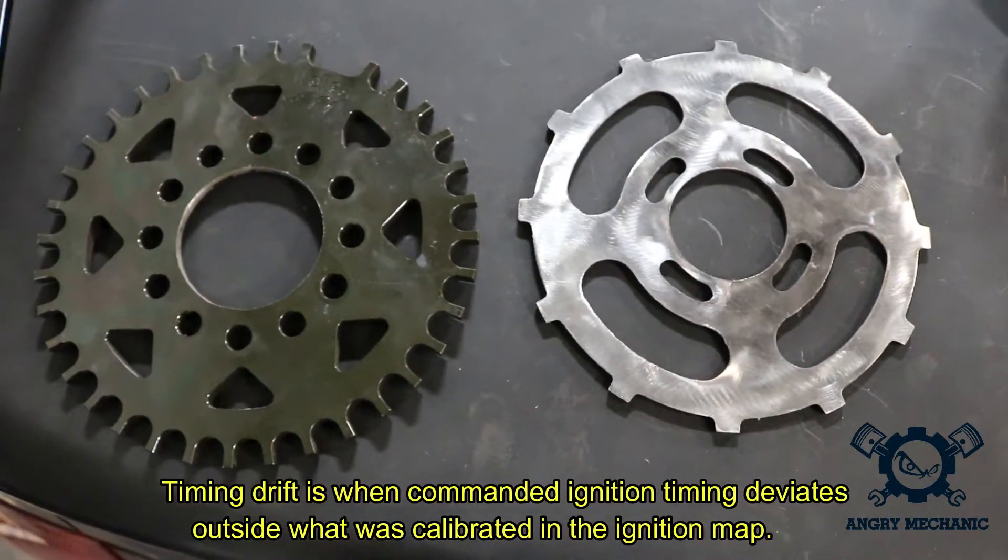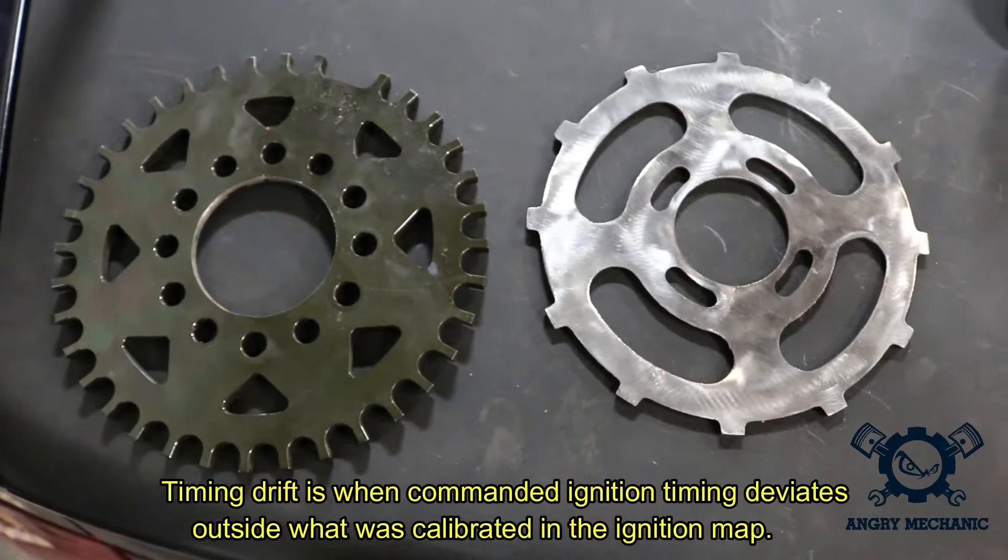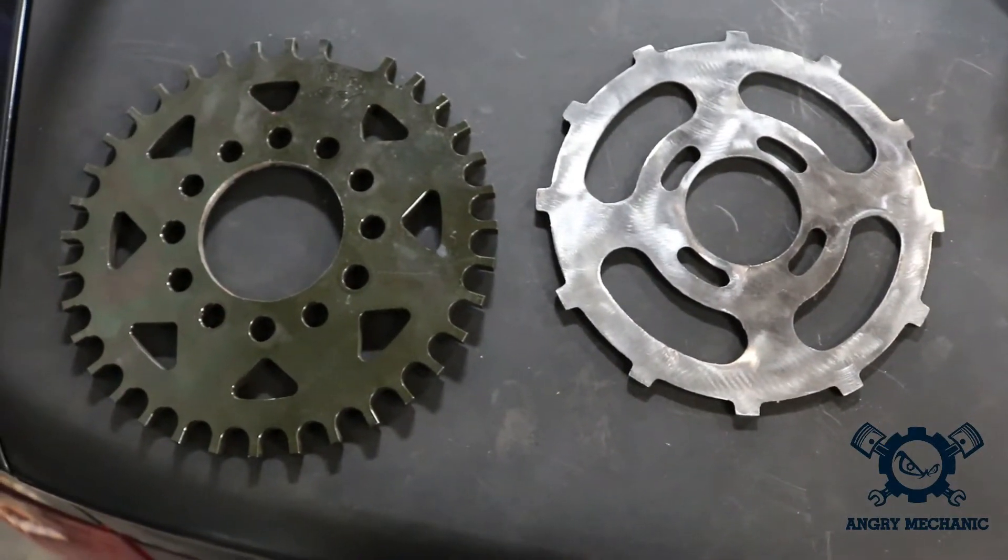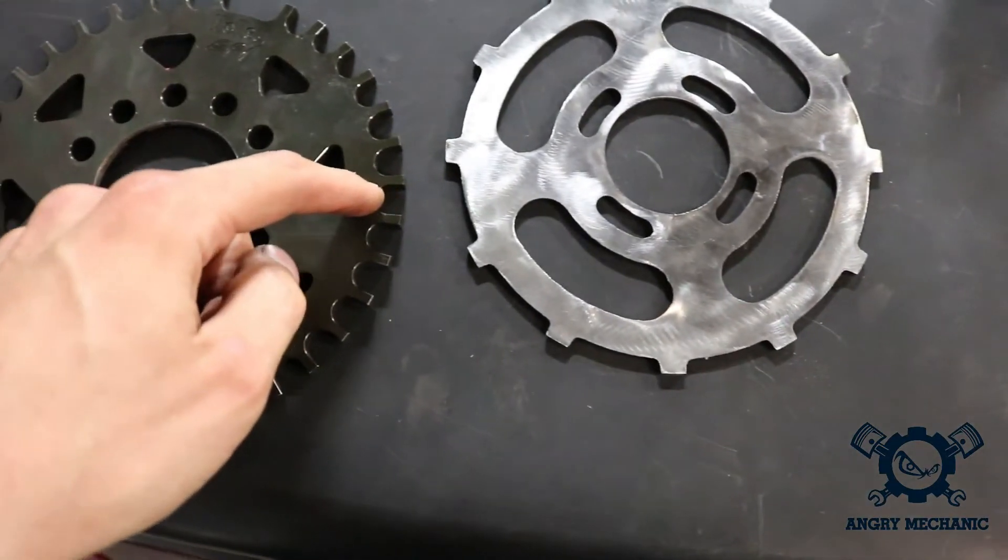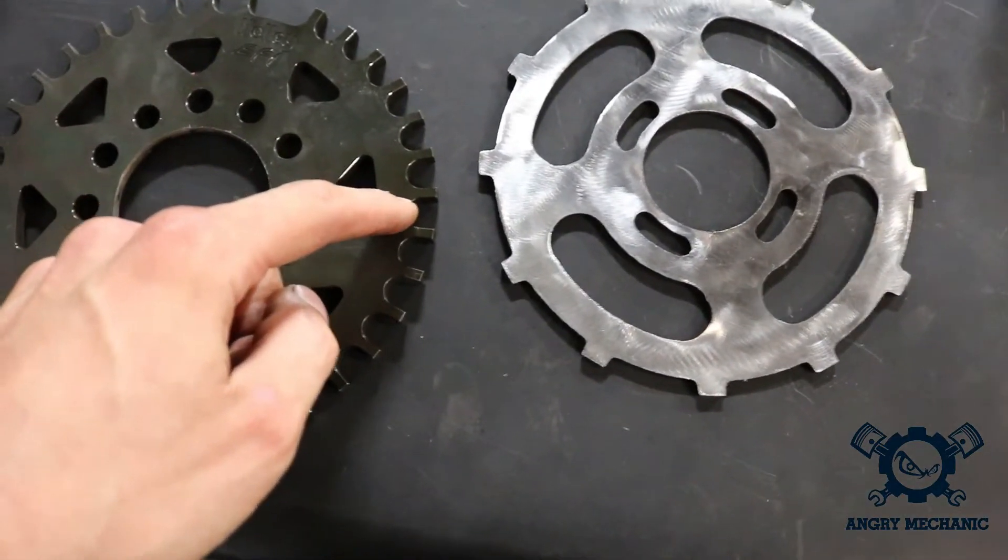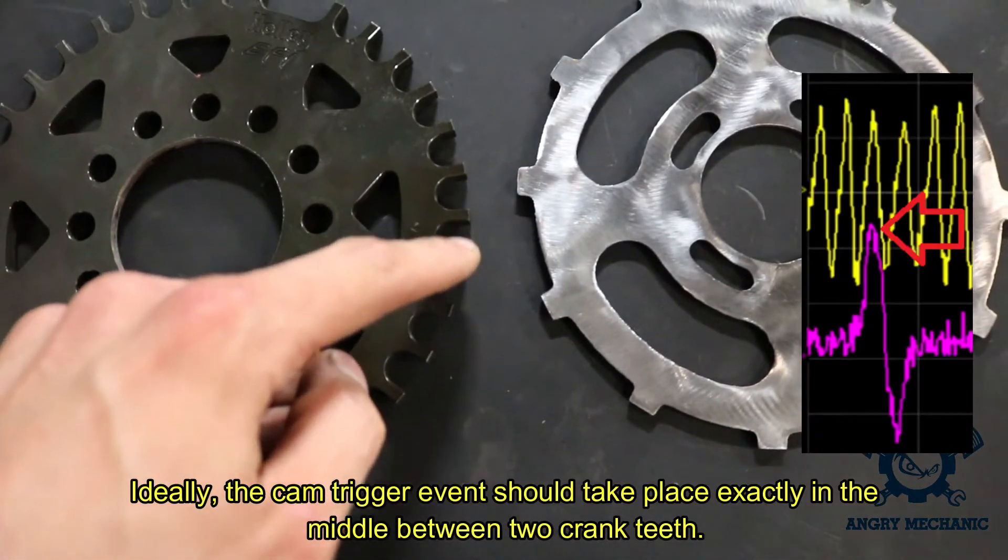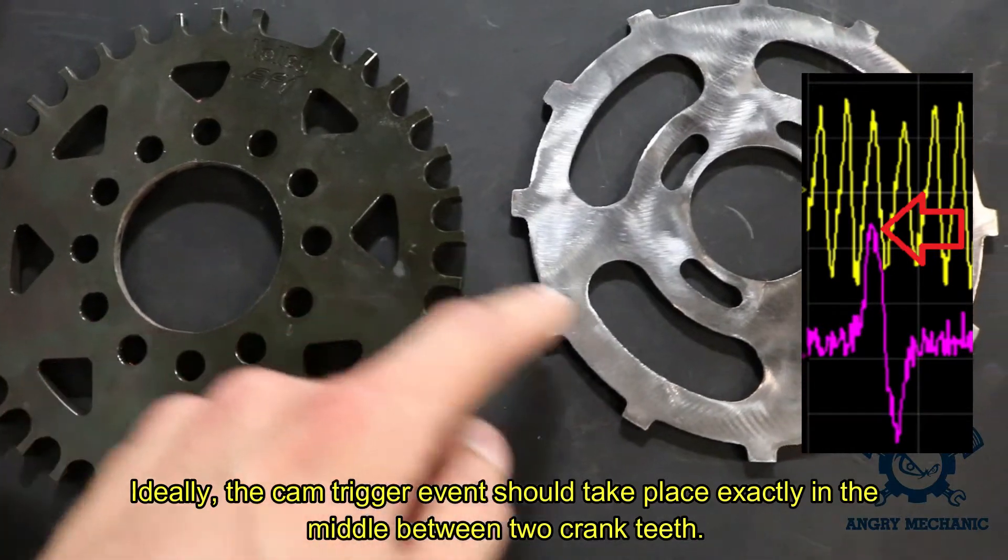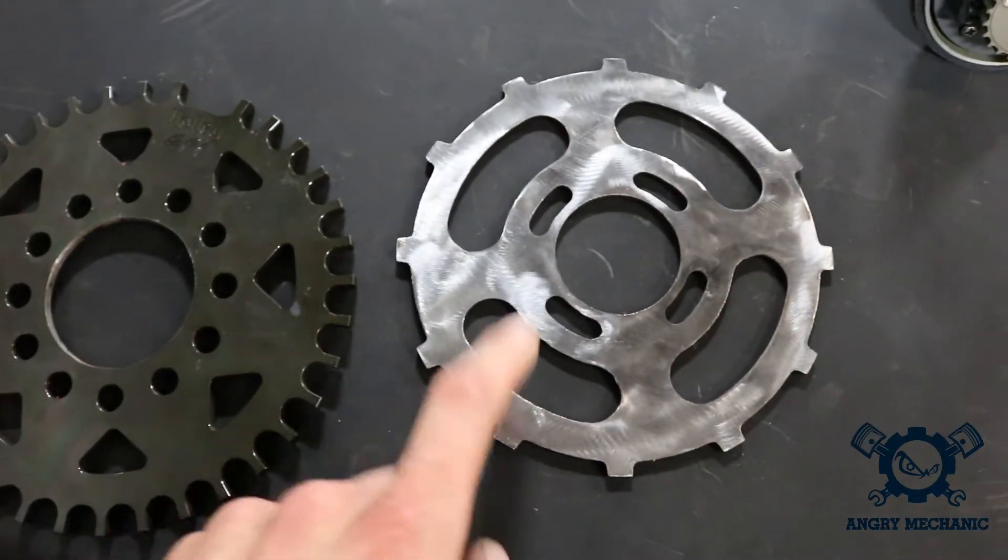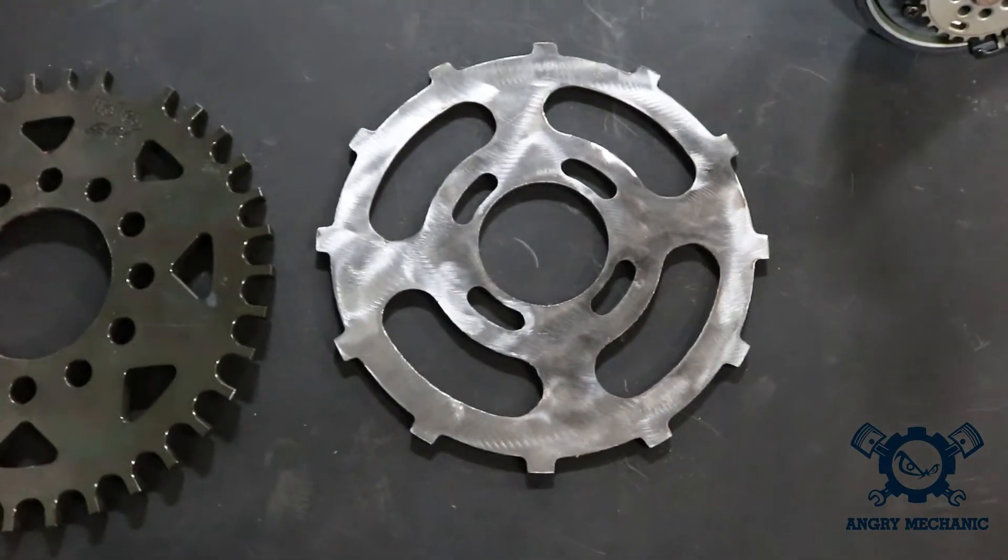But what the problem is, when we start getting to higher RPM applications, as I said earlier, the cam event has to take place in between two trigger teeth here on the crank. You can see the margin of error now that we have. There's less margin of error on a wheel with more teeth versus a wheel with less teeth. So I would say this wheel here is better suited for high RPM applications.